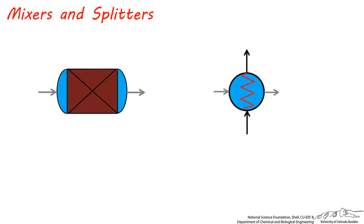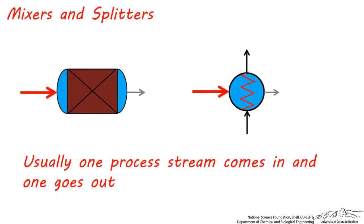When you're using simulation software, in almost all cases, you must have one process stream arrow going in, and one process stream arrow coming out.